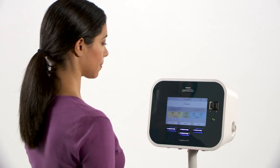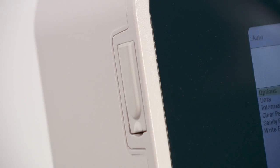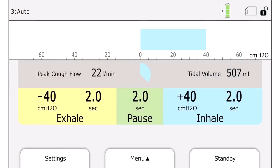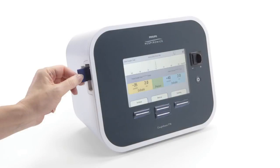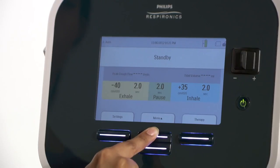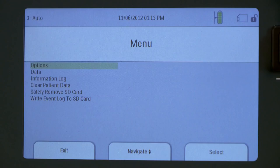CoughAssist T70 comes with an SD card inserted in the SD card slot on the side. An SD card icon will appear on the top right corner of the screen. Your clinician may ask you to remove this card in order to review information about your treatment. From the standby screen, press up on the center button under menu.